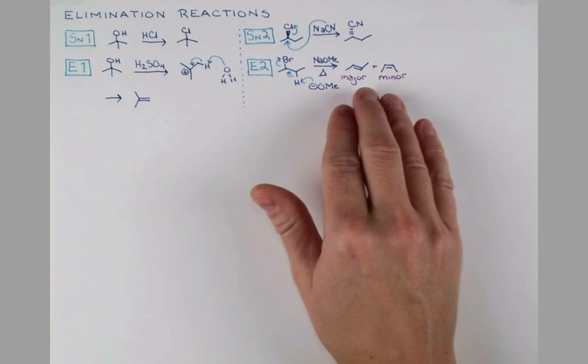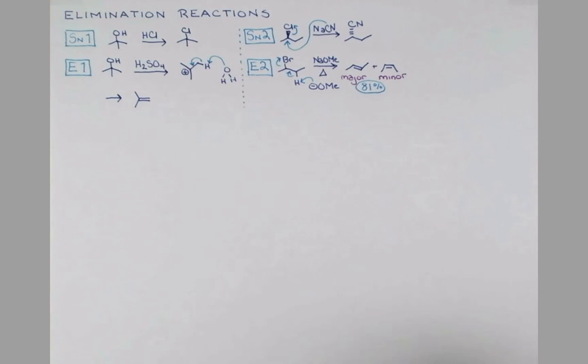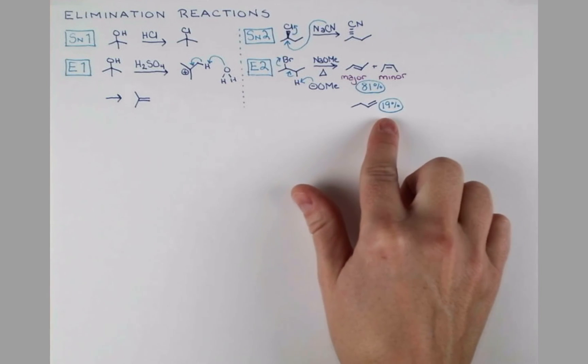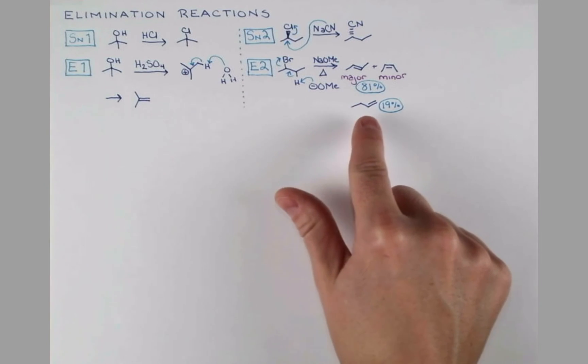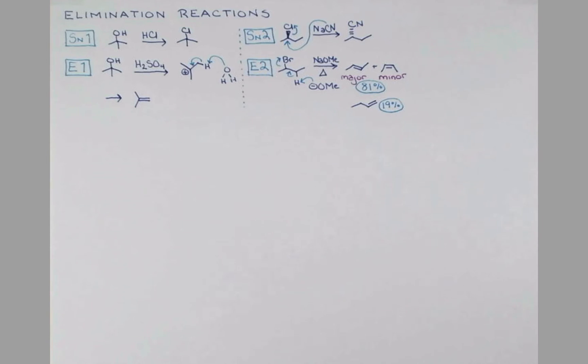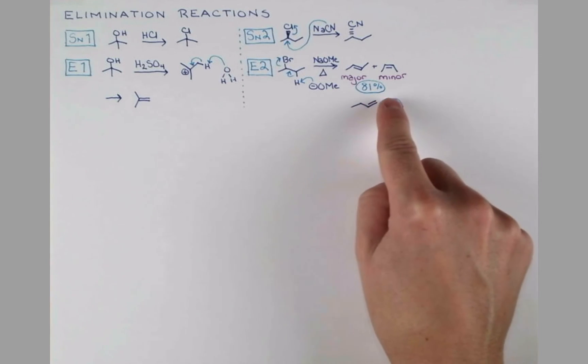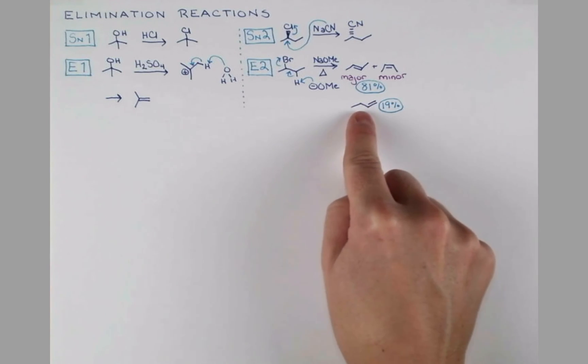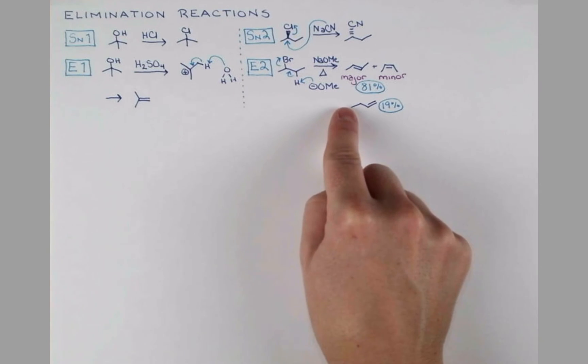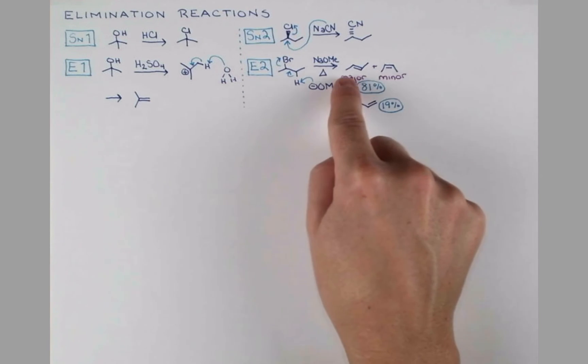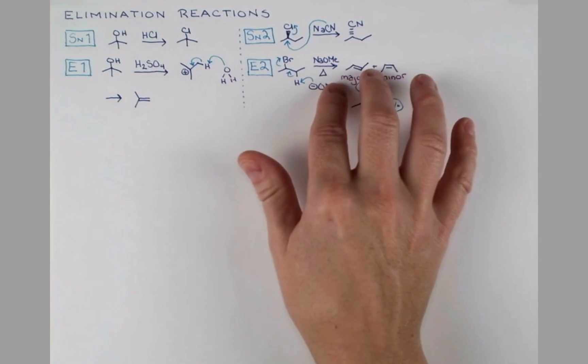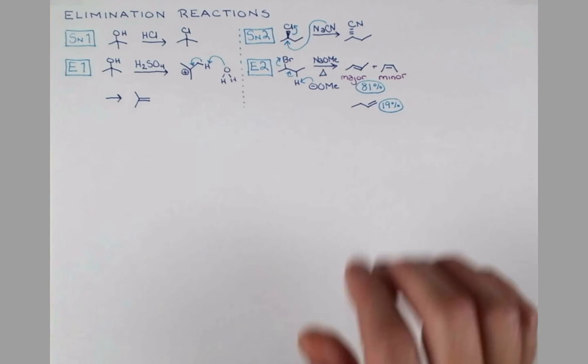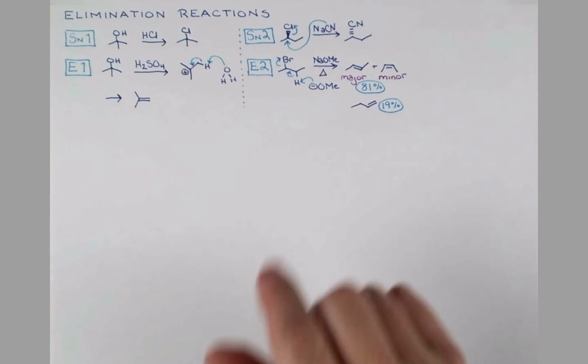From this reaction, we'll get a mixture of alkenes resulting from the arrow pushing I've shown here, with the less crowded E-alkene being the major product. The reaction gives 81% of this mixture. Now we're also going to get 19% of another product. Now this product is formed from elimination on this carbon, giving a less substituted alkene. What I mean by less substituted is, you see on the alkene we have two hydrogens on this side, and on this side we have one hydrogen and one alkyl group.